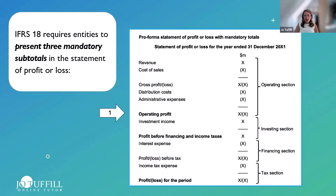The second mandatory subtotal is profit before financing and income taxes — effectively operating profit plus investment income from the investing section. Then we have the financing section covering how the business finances itself, followed by income tax. The third mandatory subtotal is profit or loss for the period. Gross profit and profit before tax are not mandatory under IFRS 18 but are almost universally presented and effectively required by other standards.